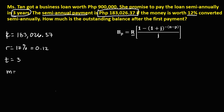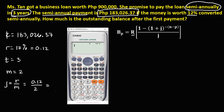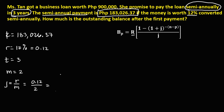For M, since semi-annually, M is equal to 2. To solve for the interest rate per period, that's R over M, so 0.12 divided by 2 equals 0.06. So the interest rate per period is 0.06.